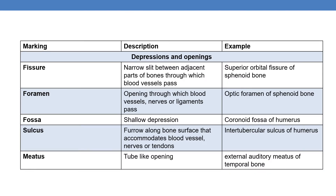Now let us look at the various types of bone surface markings, starting with depressions and openings. The first is a fissure — a narrow slit between adjacent parts of bone through which blood vessels pass. An example is the superior orbital fissure of the sphenoid bone.